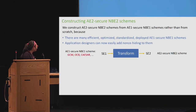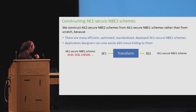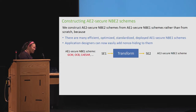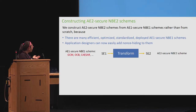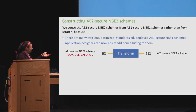We can now discuss how to construct AE2-secure NBE2 schemes. We believe the correct approach is transforms, because constructing AE2-secure NBE2 schemes from scratch would ignore all the work done to standardize, optimize, and prove secure the existing NBE1 schemes. A transform takes an NBE1 scheme SE1 and possibly other primitives and gives back an AE2-secure NBE2 scheme — it's like magic.